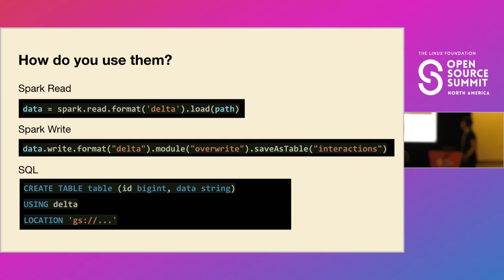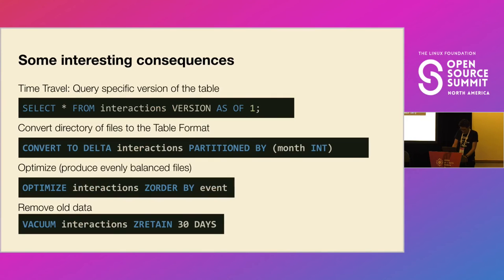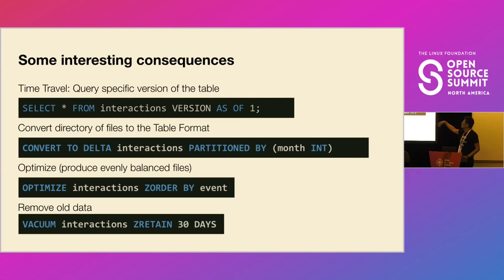How do you use this in practice? If you're familiar with Spark, it's straightforward — you just change the format from Parquet to Delta, and that's most of it. For SQL systems like Hive, you just define that you use Delta. The consequences are significant: you can do SELECT queries that depend on a specific version number or a timestamp. From a data science perspective, this is huge — you can query what the data looked like when you trained a model or extracted features.